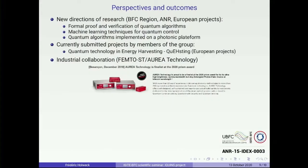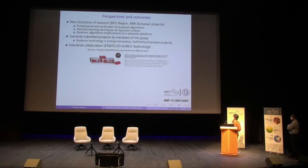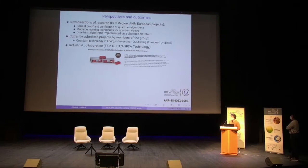A couple of perspectives: at the end of the project, it appears that there are new directions to take, especially in computer science. Alan Giorgetti from FEMTO pointed out the interest in defining formal proof and verification of quantum algorithms, and we have a PhD program ongoing on this. We also used machine learning for studying entanglement mathematically, but it could also be used for developing quantum control. We have platforms to produce single photon sources, detectors, and entangled photons — so why not try to implement small quantum algorithms and protocols? There is a currently submitted project by some members on quantum technology and energy, and ongoing collaboration between FEMTO, ST, and Aurea Technology, a company that produces and sells photon sources and detectors.